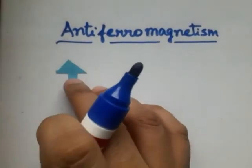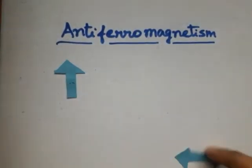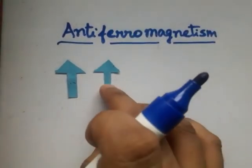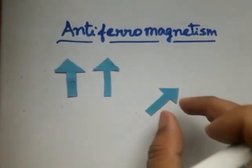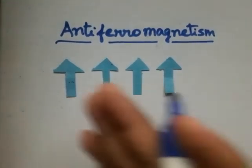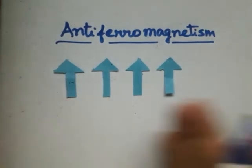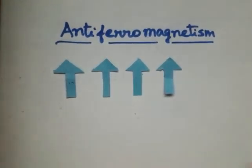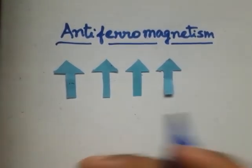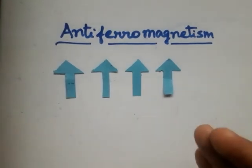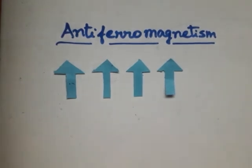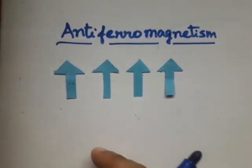We remember that in ferromagnetism, once the external magnetic field is applied, the domain spins become parallel with respect to each other, and once the external magnetic field is removed, they still remain parallel. That is why ferromagnetic substances are strongly attracted by a magnetic field. These are the substances we encounter in everyday life, like the bar magnet or the refrigerator magnet.